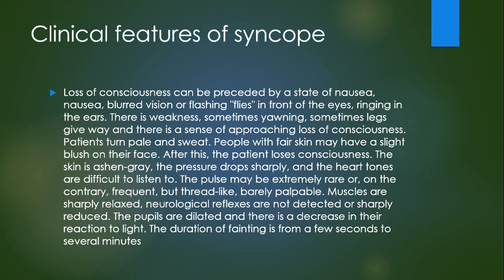Clinical features of syncope: loss of consciousness can be preceded by nausea, blurred vision or flashing flies before the eyes, ringing in the ears, weakness, yawning, legs giving way, and a sense of approaching loss of consciousness. Patients turn pale and sweat. After this, the patient loses consciousness; the skin is ashen gray, pressure drops sharply, heart tones are difficult to listen to, pulse may be extremely rare or frequent but thread-like, muscles are sharply relaxed, neurological reflexes are not detected, pupils are dilated with decreased reaction to light. Duration: from a few seconds to several minutes.